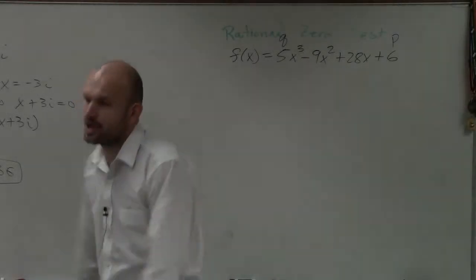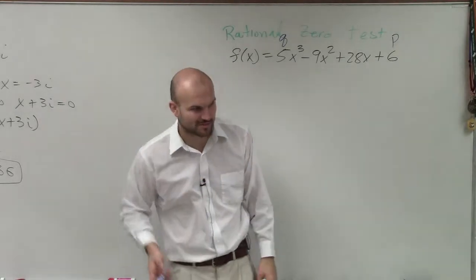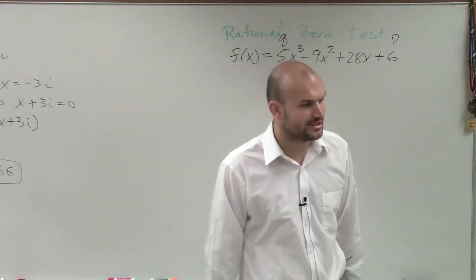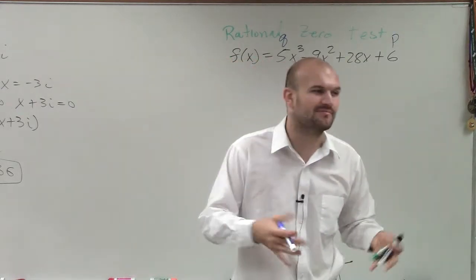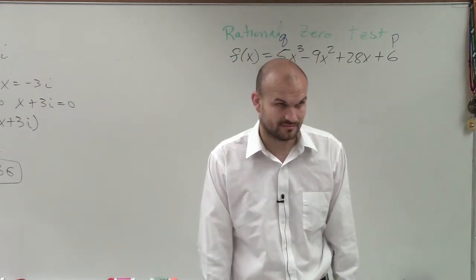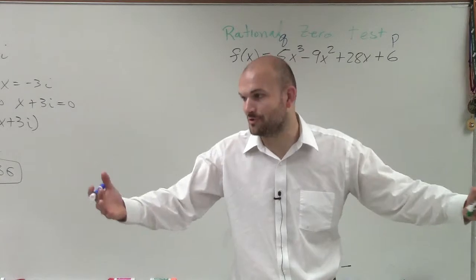So when applying Descartes' rule of signs, the next thing we're going to be doing is - we talked about the rational zero test, that's going to tell us the number of possible rational zeros. And that's it, just possible rational zeros.